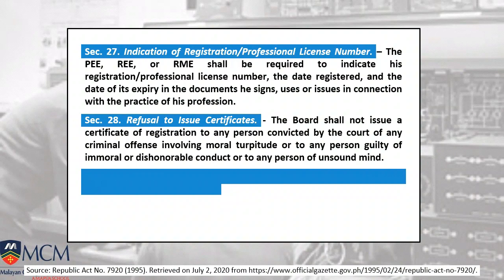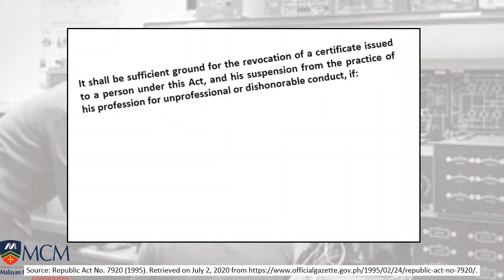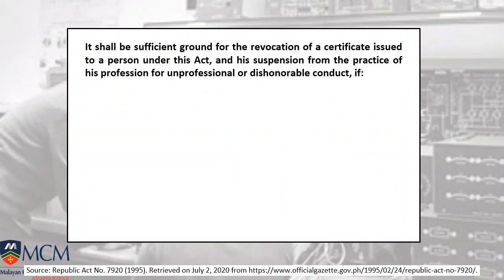Section 28 covers refusal to issue certificates: the board should not issue a certificate to any person convicted by the court of any criminal offense. Section 29 covers the possibility of revocation of the Certificate of Registration and suspension from the practice of the profession if you are involved in moral turpitude or guilty of any immoral or dishonorable conduct.